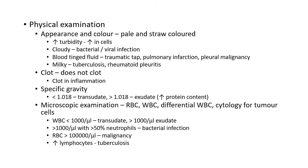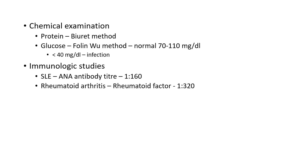If the specimen is clear, no dilution is needed; if turbid, it is diluted with saline in a ratio of 1:20. A smear prepared from the sediment is used for differential WBC count — Leishman stain or Gram stain can be used, and 100 cells are counted. For cytological examination of tumor cells, Papanicolaou stain or hematoxylin and eosin stain can be used.